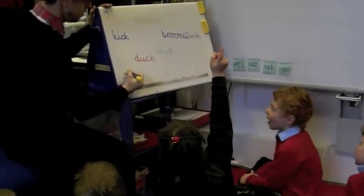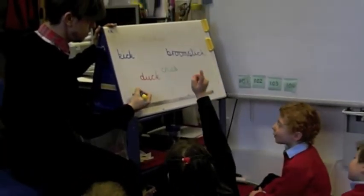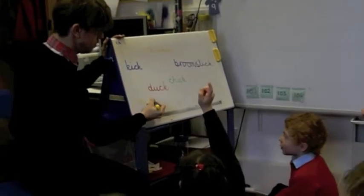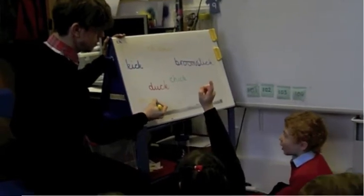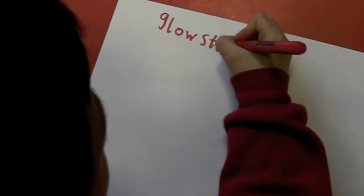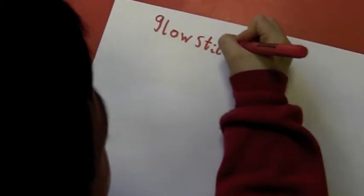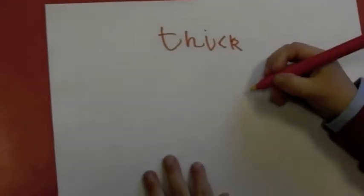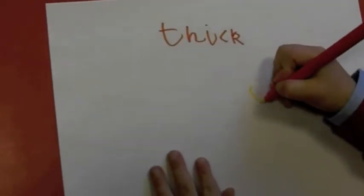Before I send them off to their activity, I model it on the board using my felt-tips and using some of my ideas for the CK spellings. And then the children go to their desks and create their wallpapers.